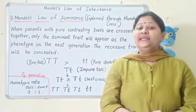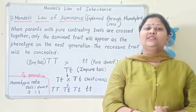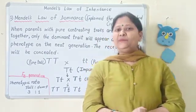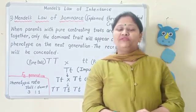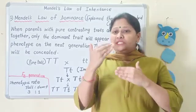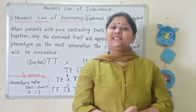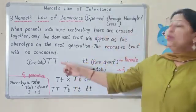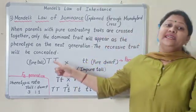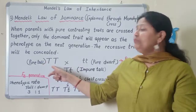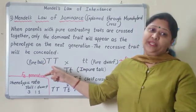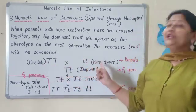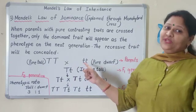On performing the monohybrid cross, which we studied in the last session, Mendel considered one contrasting character in the pea plant — tall and dwarf. When Mendel performed the monohybrid cross, he took a pure tall parent, that is homozygous tall, and a pure dwarf parent.